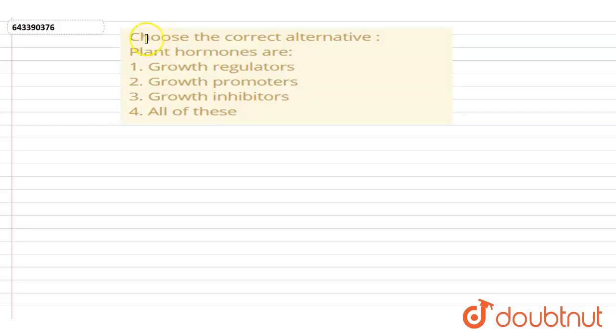The question says: Choose the correct alternative. Plant hormones are: 1. Growth regulators, 2. Growth promoters, 3. Growth inhibitors, and 4. All of these.